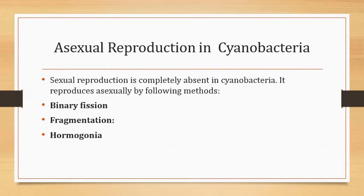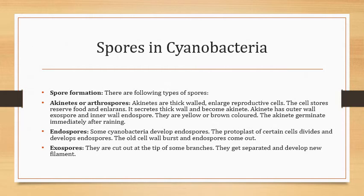Sexual reproduction is completely absent in cyanobacteria. They reproduce asexually by binary fission, fragmentation, and hormogonia formation. Cyanobacteria also have three types of spores: akinetes (or arthrospores), which are thick-walled enlarged reproductive cells with outer wall exospores and inner wall endospores — they are yellow or brown and germinate when conditions are favorable. Second are endospores, which develop inside the cell by protoplast division; the old cell wall bursts and endospores are released. Third are exospores, which are cut off at the tip of branches and develop into new filaments.